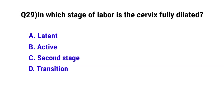Question number 29: In which stage of labor is the cervix fully dilated? The correct option is C: Second stage.